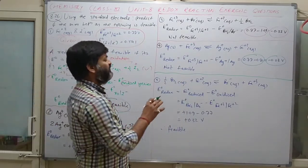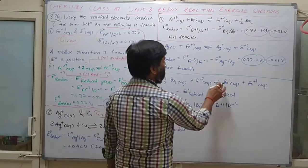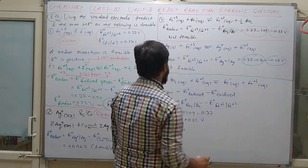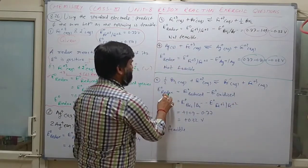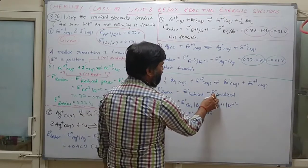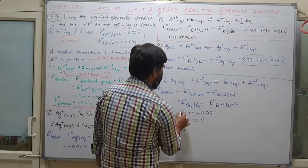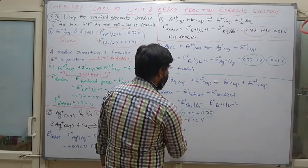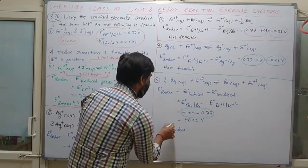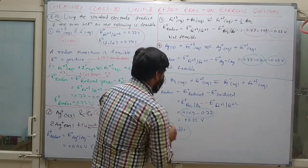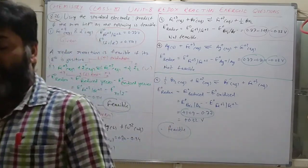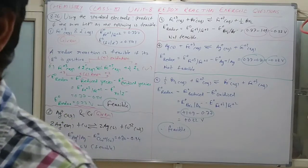Fifth question: reaction between bromine and bromide, and Fe²⁺ oxidizing to Fe³⁺. Bromine is reduced and Fe²⁺ is oxidized. Using the given reduction potential values and solving, a positive value is obtained. Therefore this reaction is feasible.